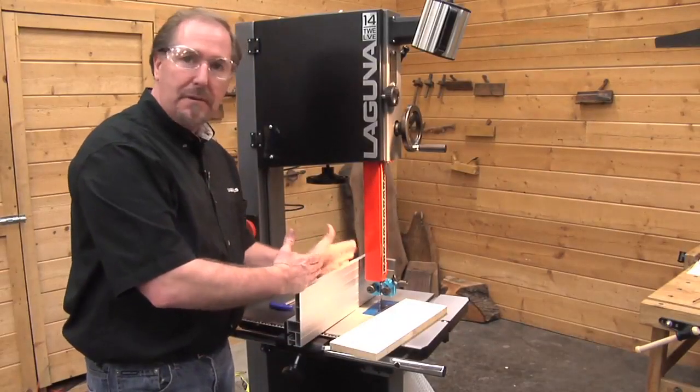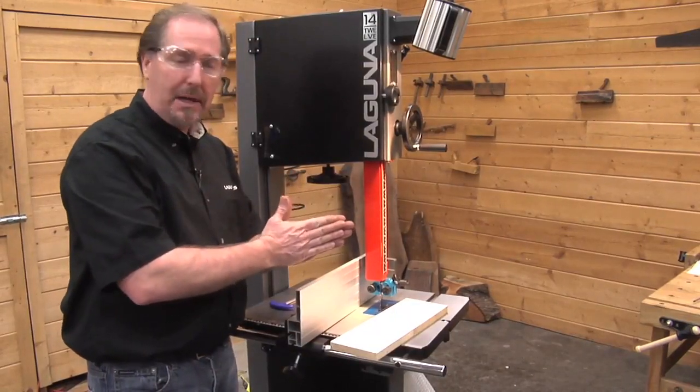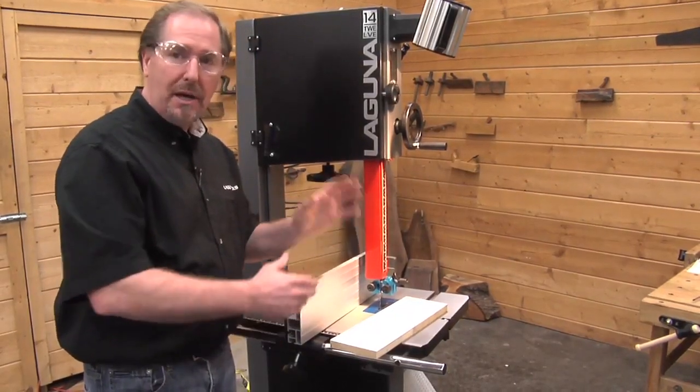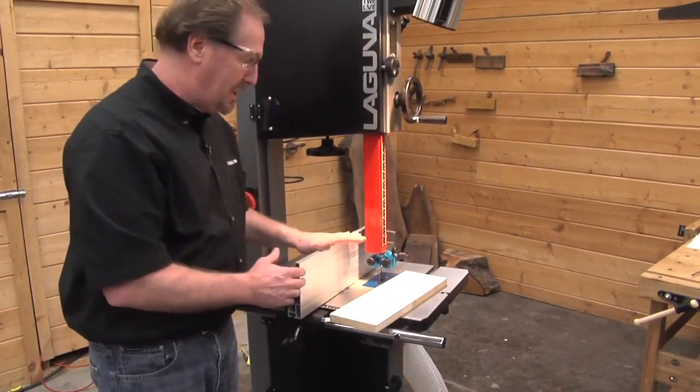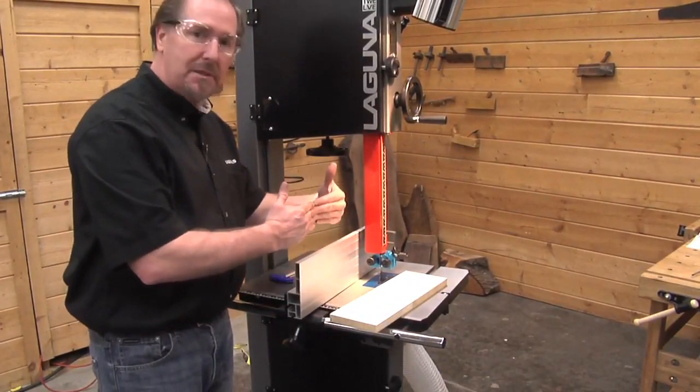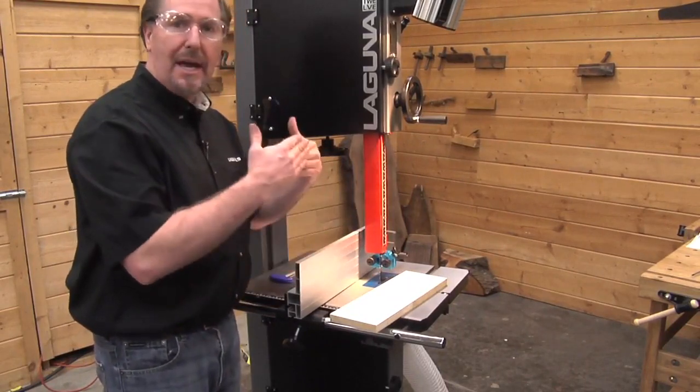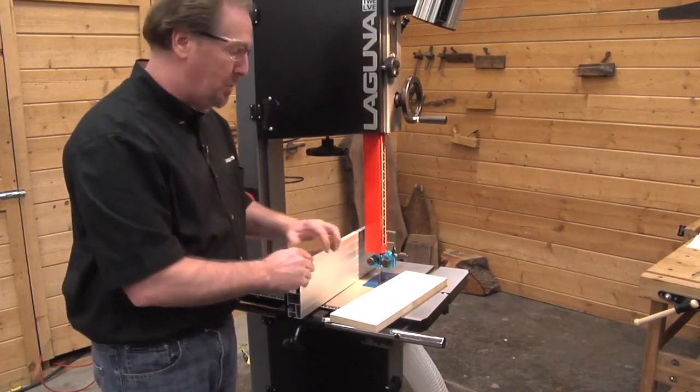On a table saw, the fence is adjusted to be parallel with the blade. Since the bandsaw has a blade that moves back and forth on wheels, it's more of a dynamic setting. We're going to adjust the fence to be parallel with the blade during the actual cutting operation.